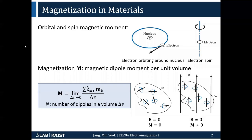Magnetic fields in matter. In this chapter, what we learned was that materials are actually composed of nuclei and electrons, and due to the electron orbiting motion and the electron spin, both of these create small magnetic moments. We define magnetization as a volume average of magnetic dipole moment. In a typical situation, these magnetic dipoles are randomly oriented, so on average the net magnetization is zero.